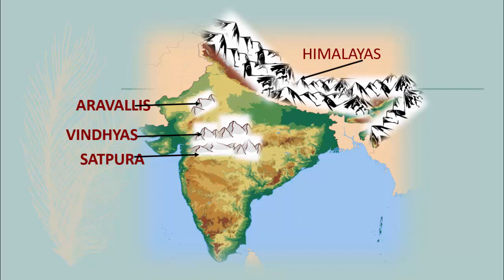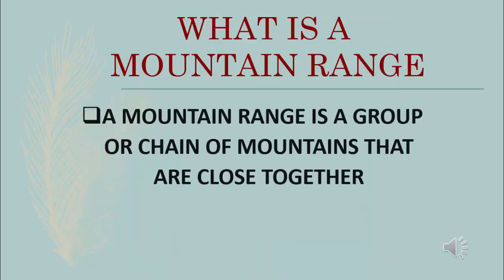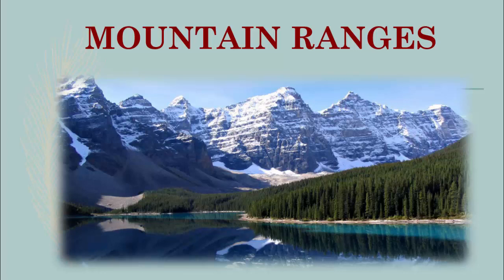When we are talking about mountain ranges, we should know what a mountain range is. A mountain range is a group or chain of mountains that are close together. Look at this picture showing an example of mountain ranges — the mountains are in a line. So the mountains which are in a line like a chain are called mountain ranges.